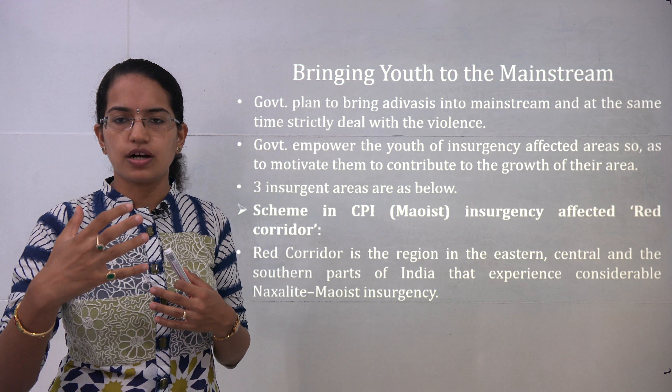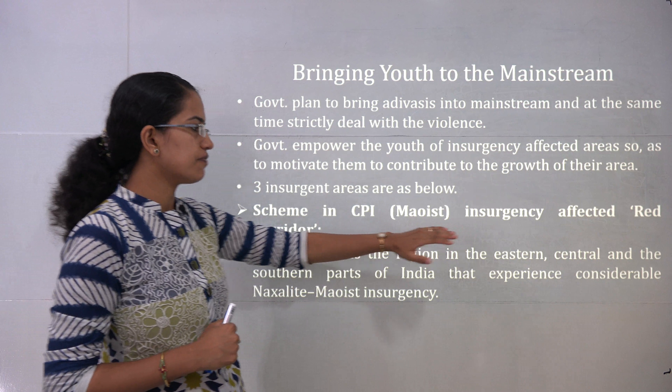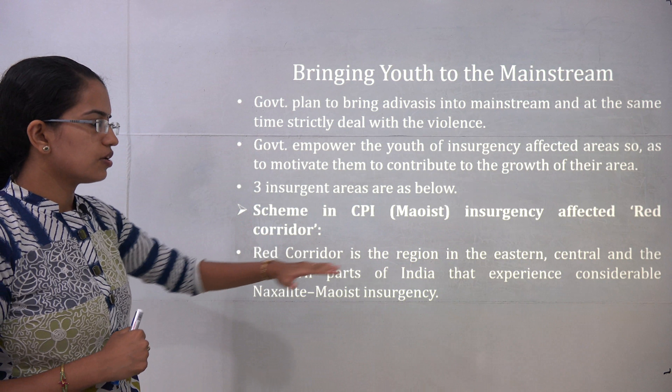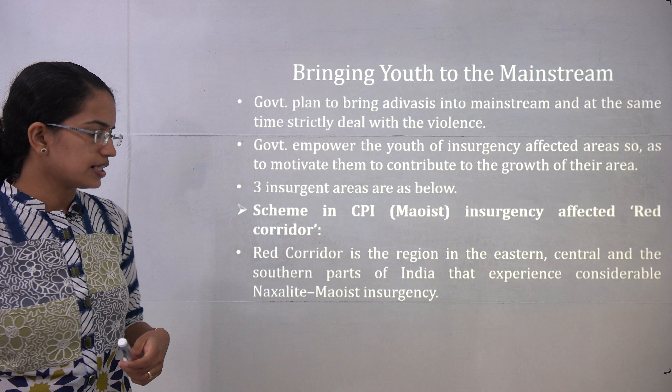The Maoist insurgency-affected red corridor covers eastern, central and southern parts of India. Programs launched under skill development include the Tare Zameen Par initiative of the Jharkhand government to work with children in Palmao district's affected areas, and Prayas in Chhattisgarh, which prepares students for various competitive exams.